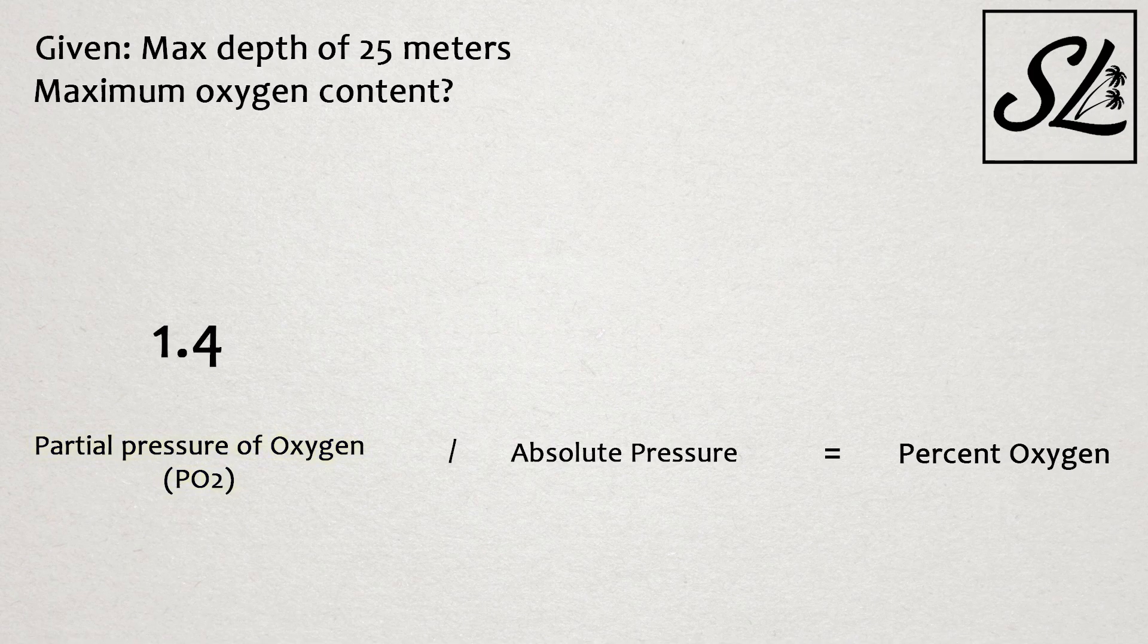Our next number will be the absolute pressure at our given depth of 25 meters. When looking at absolute pressure, we should remember that it coordinates directly with our depth. Absolute pressure at the surface is 1, increasing by 1 atmosphere every 10 meters following this. Absolute pressure at any given depth is always the depth divided by 10 plus 1.